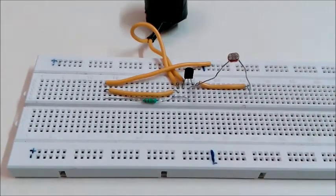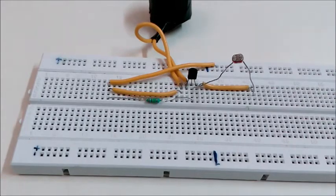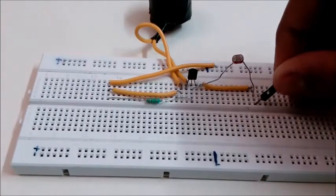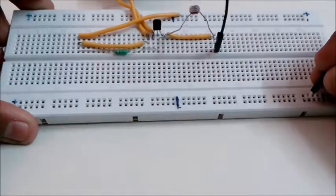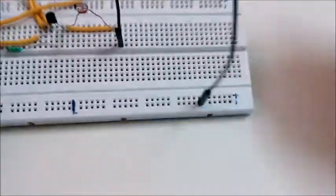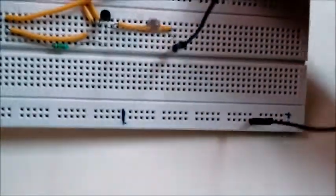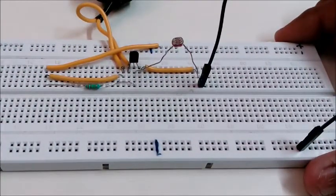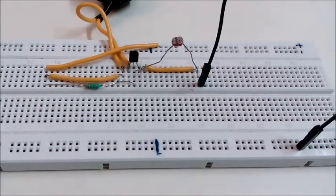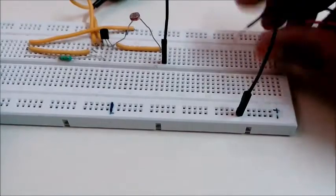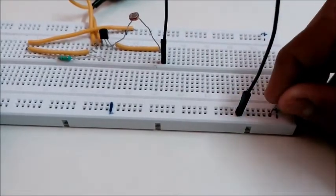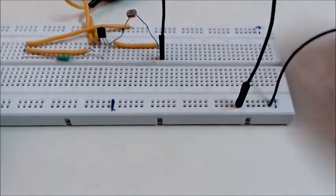Now the next step is taking another hook wire or jumper wire and connect it to the negative rail of your breadboard. As you can see, now take the battery and just put it in there.